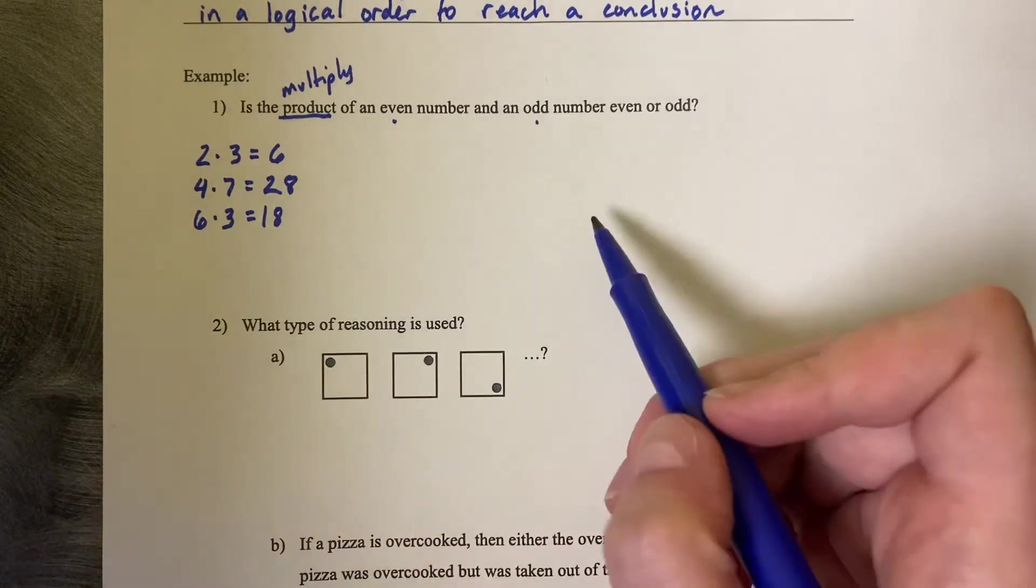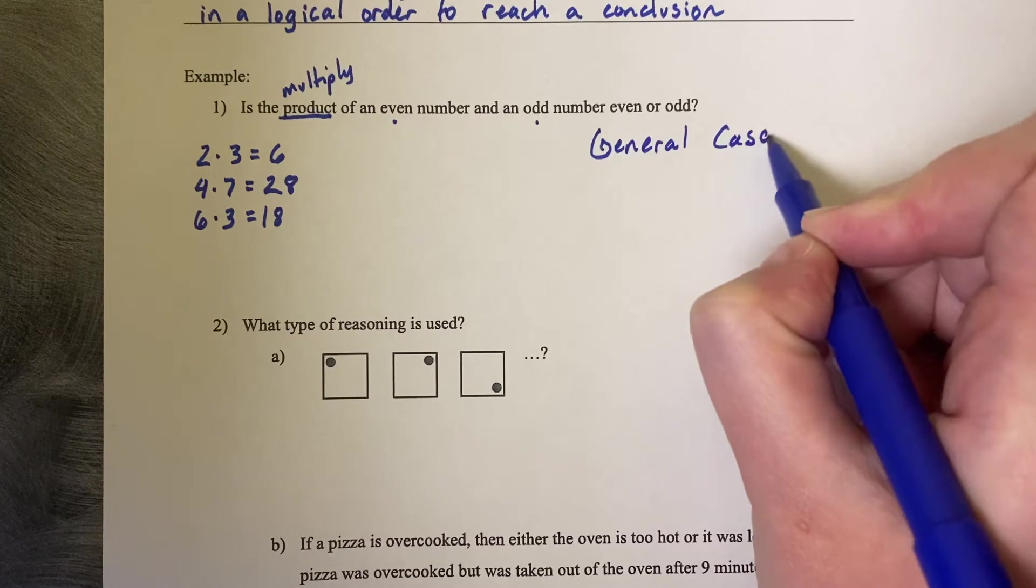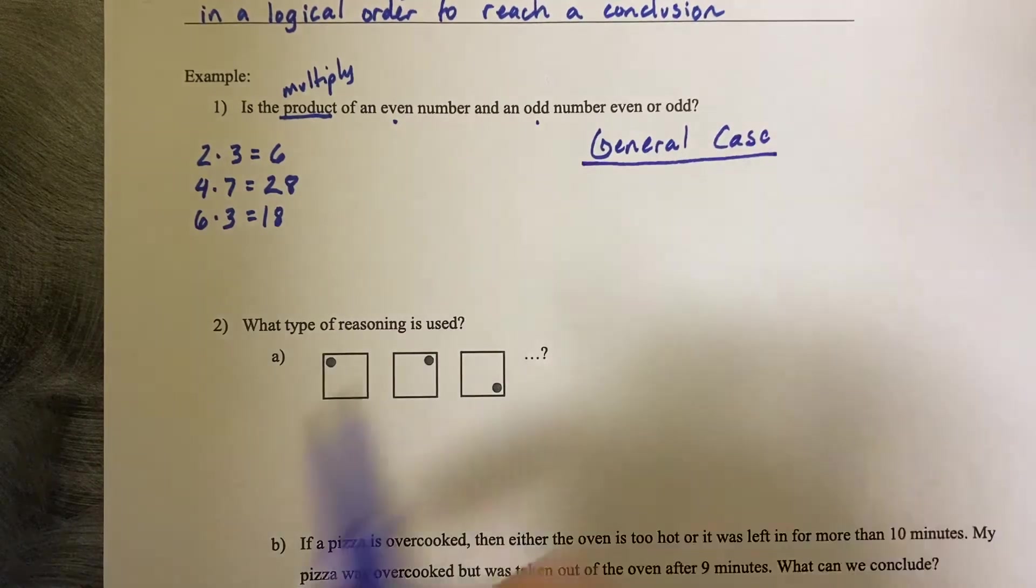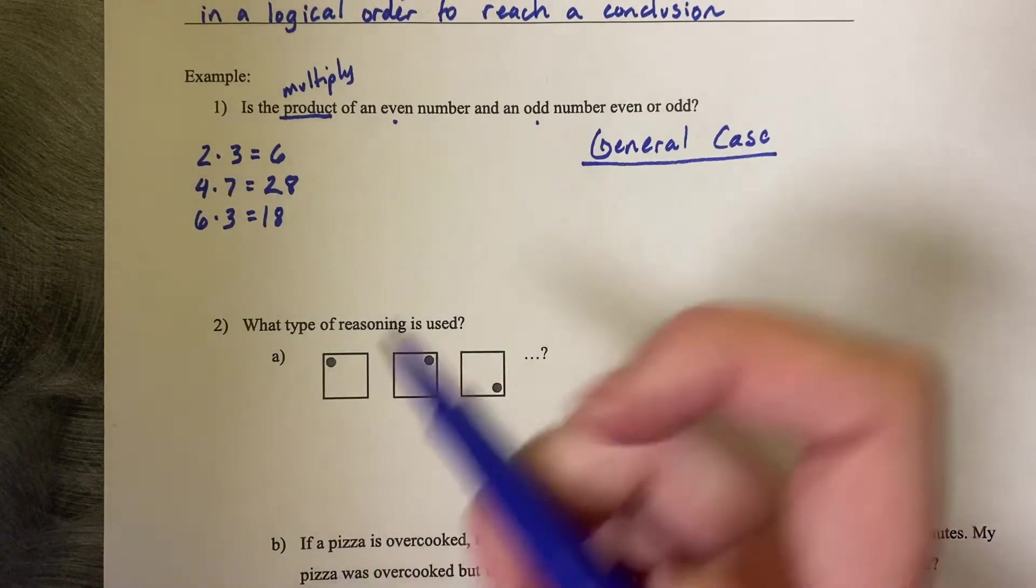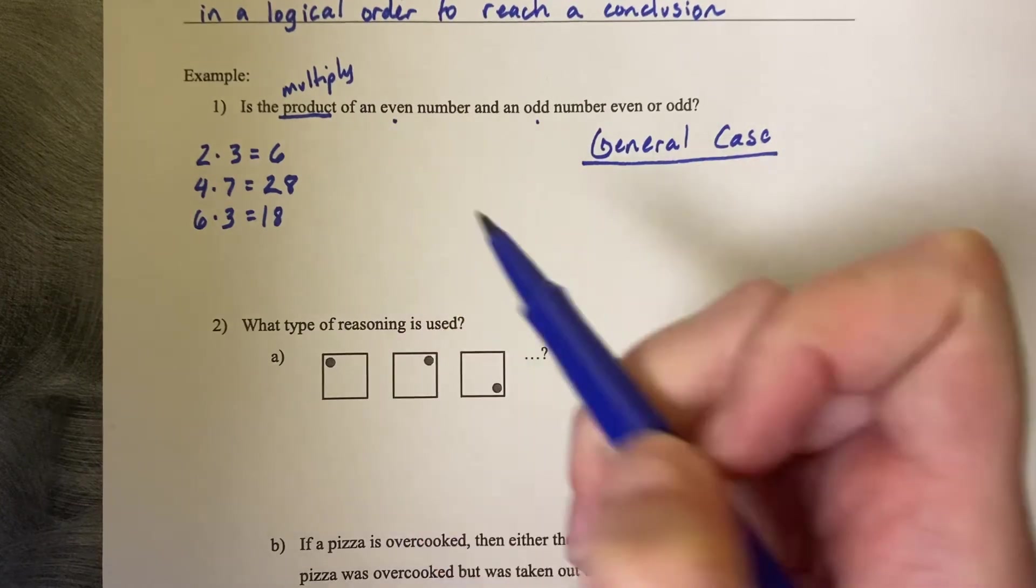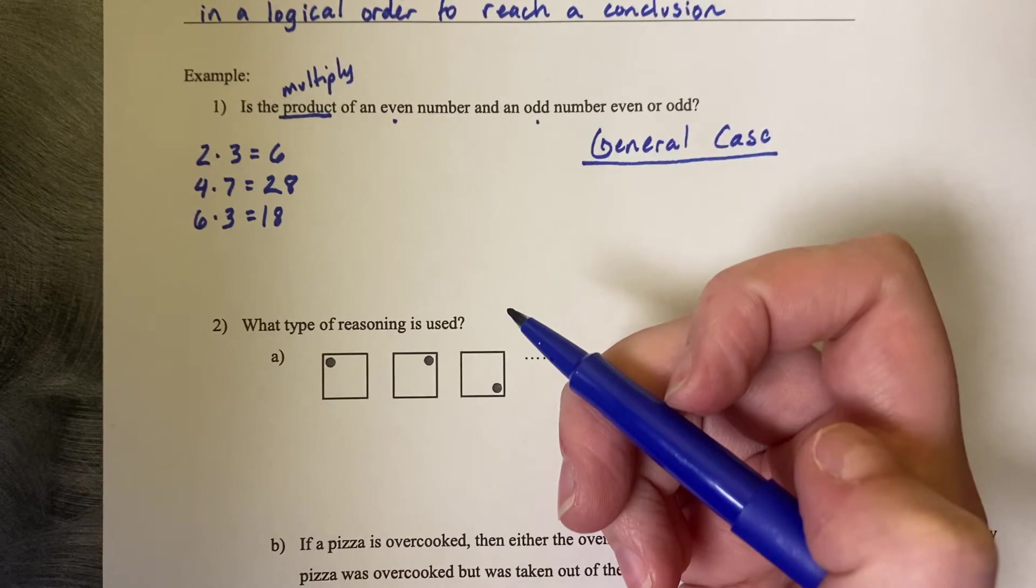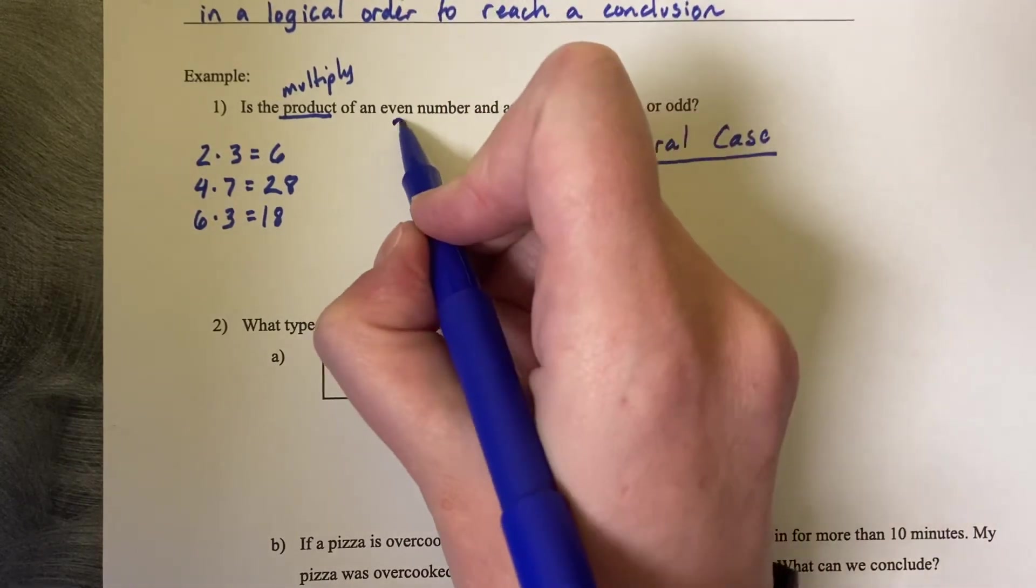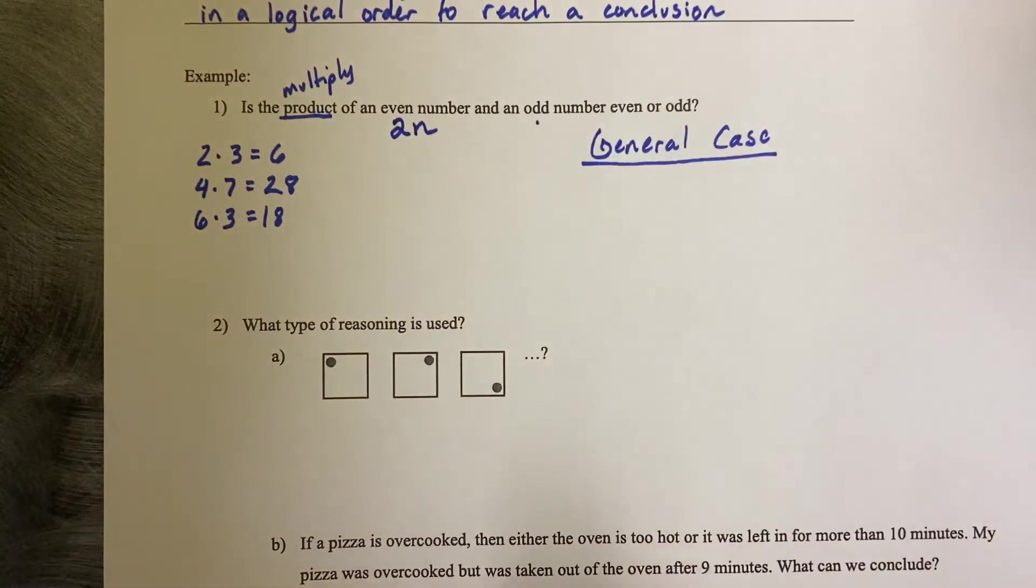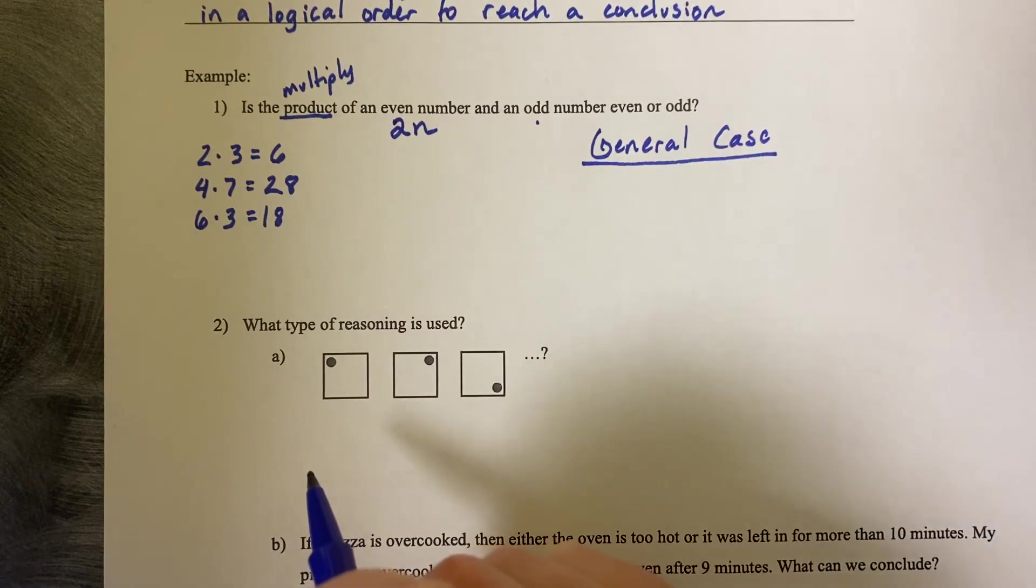And what deductive reasoning does for you is that it takes it to the general case. So this is when you're going to show that this could be true in all cases. So most of the time you're going to need to bring along a variable. So how can we write an even number for all cases? What's the true fact about even numbers? All even numbers divide by 2. So the way that you can write it is actually multiplying by 2. So if I take any number times 2, it's going to be an even number for sure.